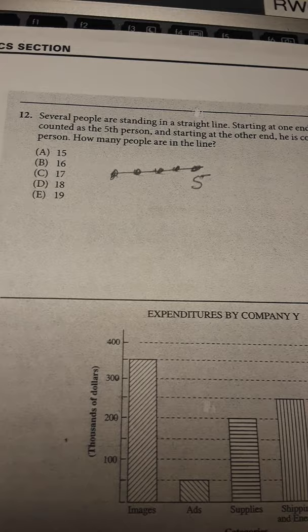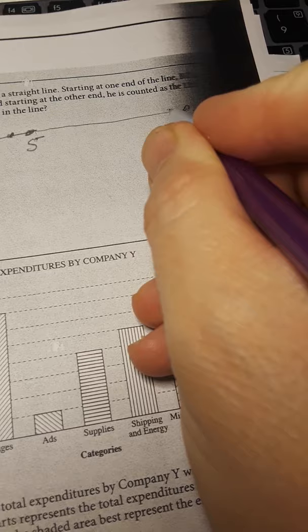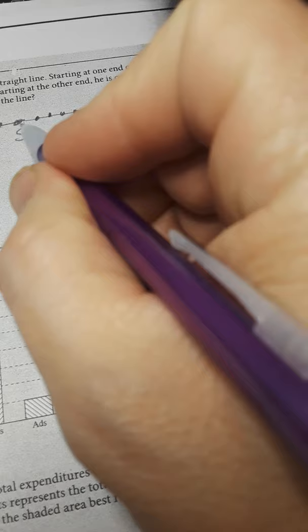Alright, so the twelfth person from the back. Okay, so we go to one, two, three, four, five, six, seven, eight, nine, ten, eleven. And it's the twelfth person. Let's count. Here's twelve.